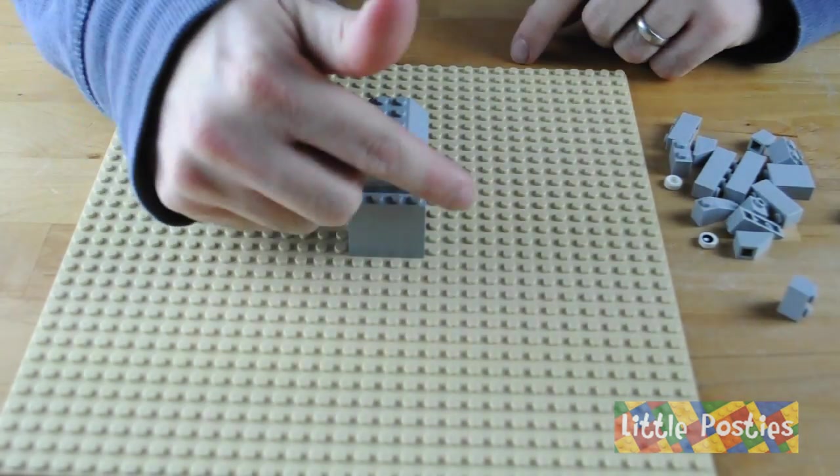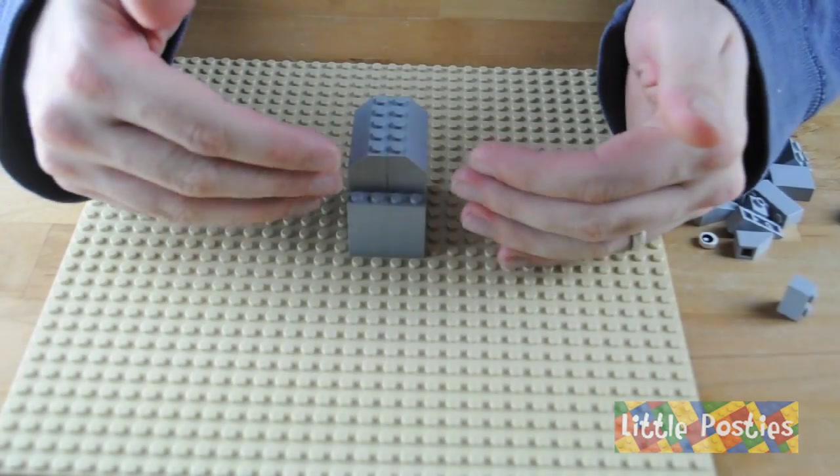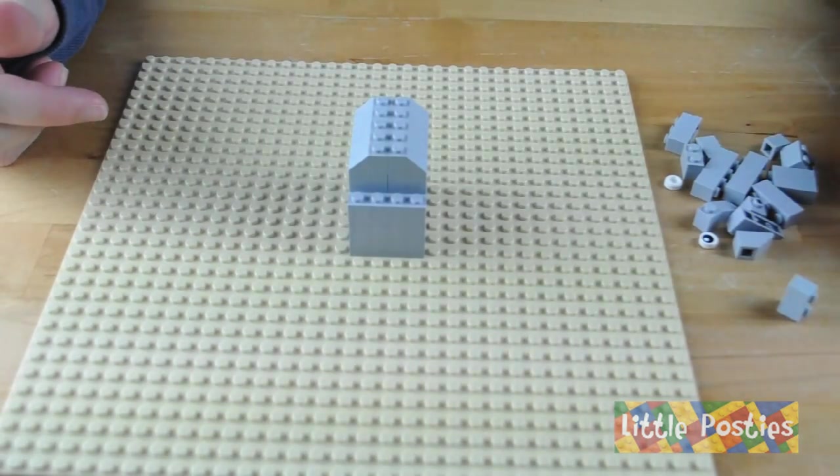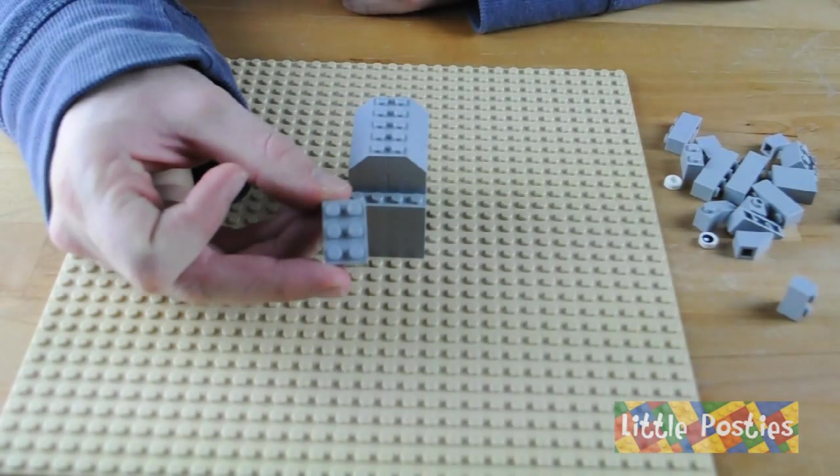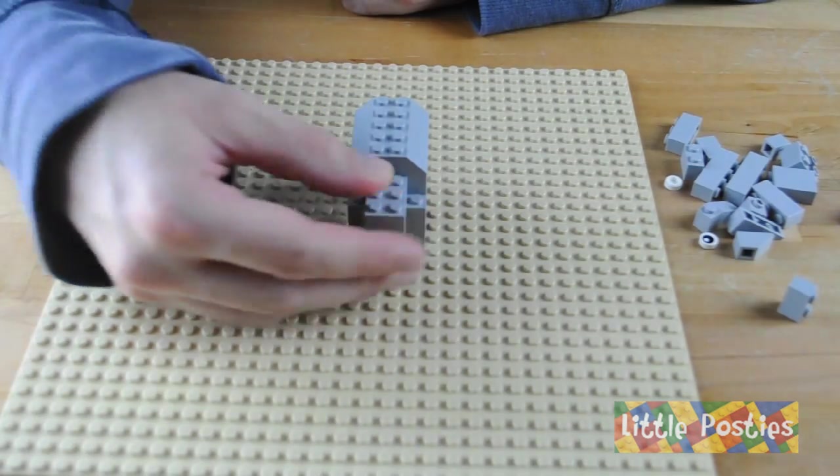We're going to start work on the front which is going to be the ears each side and the face. First of all you grab your last 2x3 brick and put that in the middle.